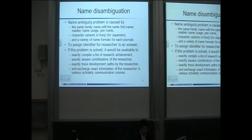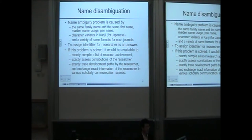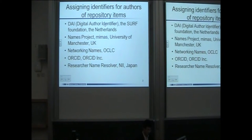We focus on the name ambiguity problem, which is caused by the same first name and main name usage. To address these issues, we assign identifiers for researchers. If this problem is solved, we can enable exact comparison of researchers and track the development of researchers from the past.